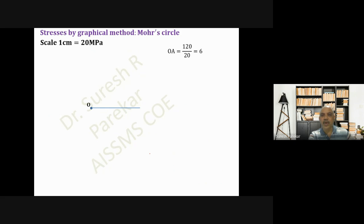So we have this as σx. Then we have σy that will be OB, which will be -4 centimeters. We have to plot towards left because it's negative. Then C will be the midpoint of this, and we have σy.